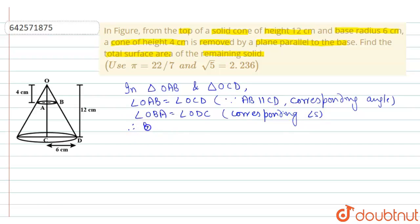So now we can write, therefore, by AA similarity, triangle OAB is similar to triangle OCD. This implies OA by OC is equal to AB by CD, which implies AB is equal to OA is 4 into CD is 6 by OC is 12. So this will be equal to 2 cm.